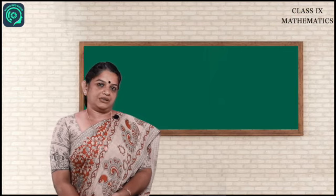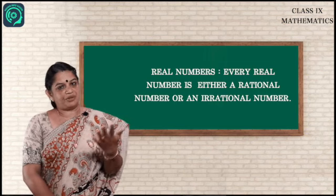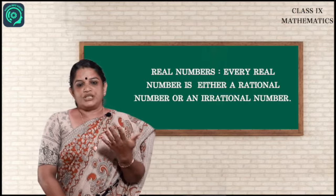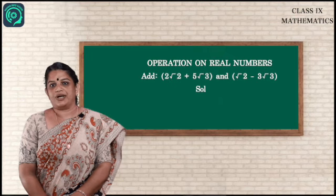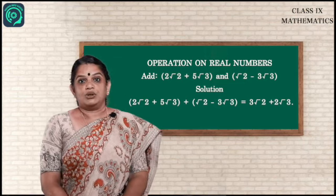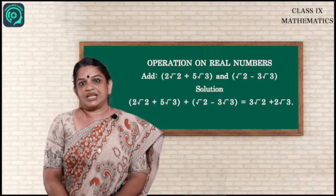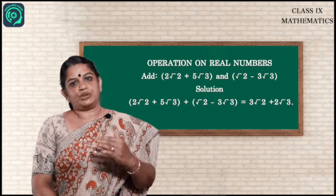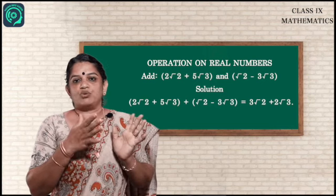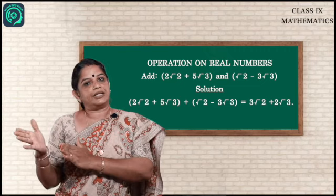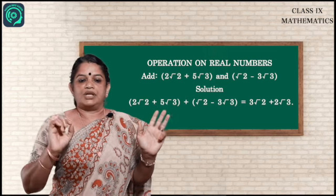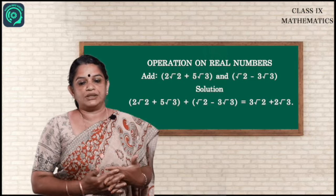Next, operations on real numbers. The basic operations — addition, subtraction, multiplication, and division — are performed on real numbers in the same way as in algebra. For example, to add (2√2 + 5√3) and (√2 − 3√3), arrange like terms nearby: 2√2 + √2 = 3√2 and 5√3 − 3√3 = 2√3. The final answer is 3√2 + 2√3.